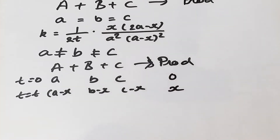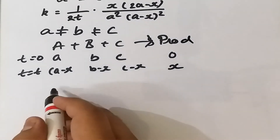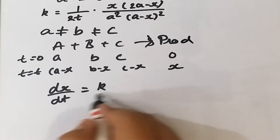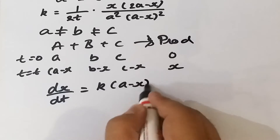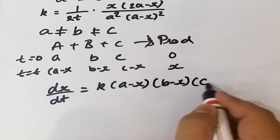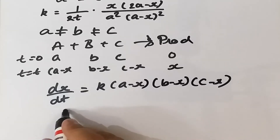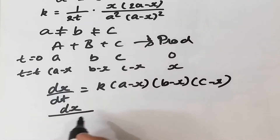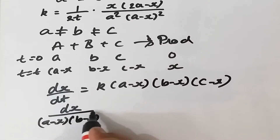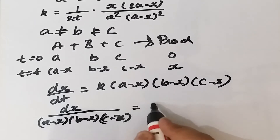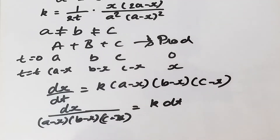Under such circumstances, the rate law can be written as dx upon dt equals k into (a minus x) into (b minus x) into (c minus x), where k is the rate constant. Rearranging, we get dx upon (a minus x)(b minus x)(c minus x) equals k dt.